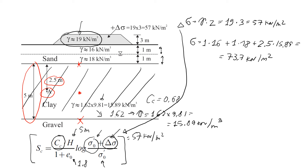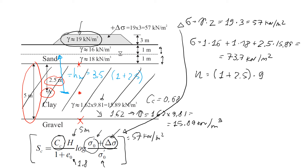Now we find the pore water pressure. We need to know how much water is above point A. The groundwater level is here, so the total height of water h_w is 3.5 meters: 1 meter in the sand plus 2.5 meters in the clay. Pore water pressure = (1 + 2.5) × 9.81 ≈ 34.3 kN/m².